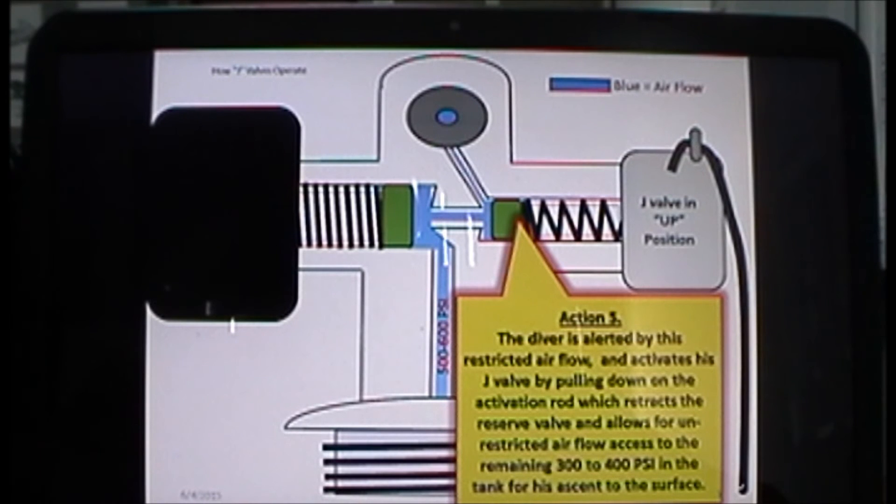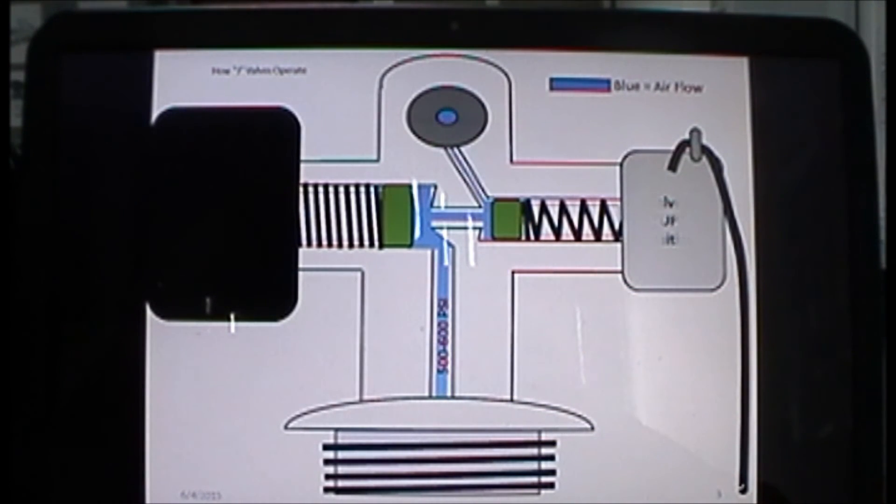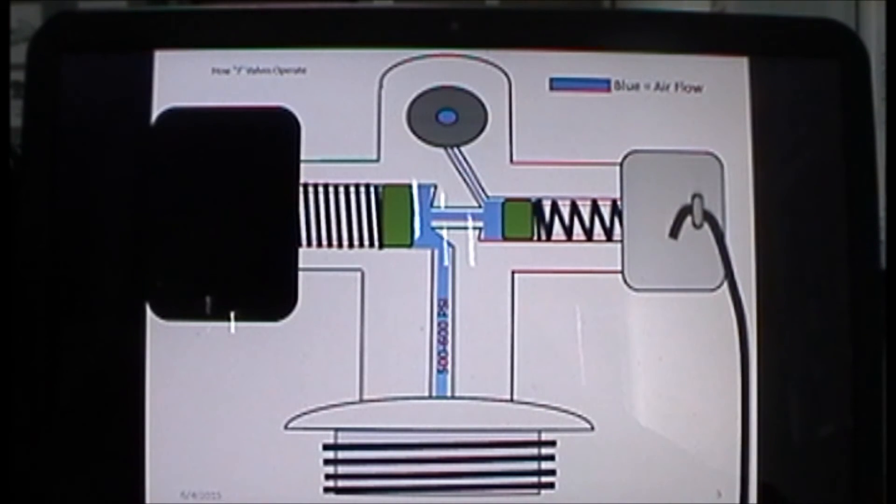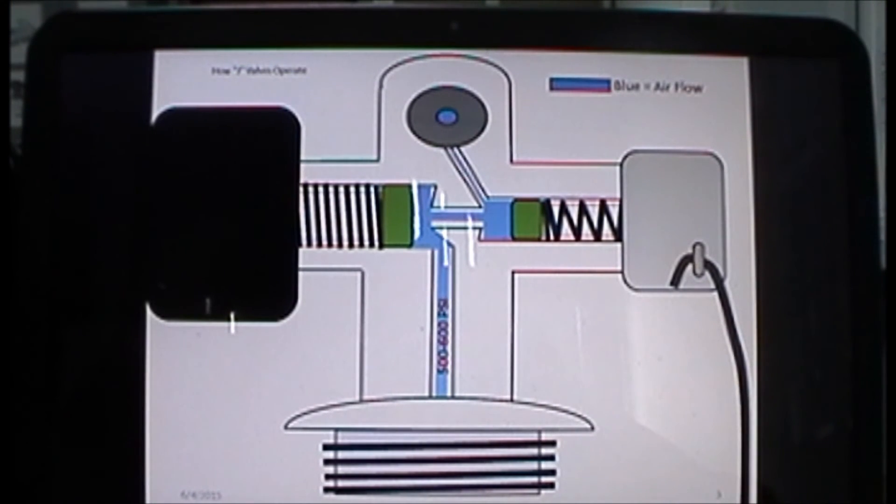We're pulling down on the J valve, and notice it pulls back on the reserve valve. That's the J valve in the 'down' or activated position. Flow resumes—albeit at a lower pressure—you still get fuller flow and enough air in your tank to get you up to the surface safely.